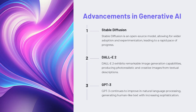Generative AI models like Stable Diffusion, DALL-E 2, and GPT-3 have seen remarkable advancements in recent years. Stable Diffusion is an open-source model, allowing for wider adoption and experimentation, leading to a rapid pace of progress. DALL-E 2 exhibits remarkable image generation capabilities, producing photorealistic and creative images from textual descriptions. GPT-3 continues to improve in natural language processing, generating human-like text with increasing sophistication. These advancements are enabling new frontiers in creative expression, content generation, and language understanding.